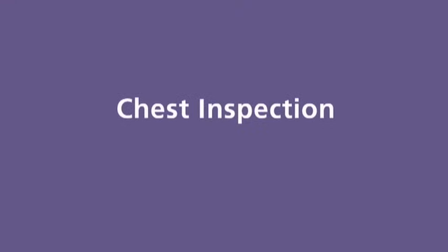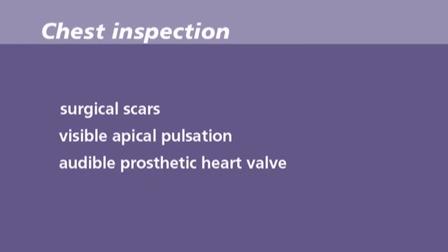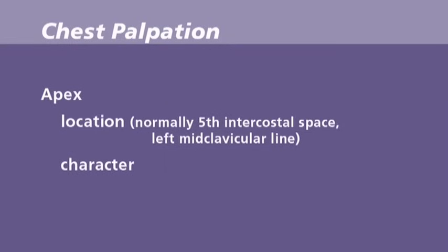The examination of the precordium is like any other examination and should include inspection, palpation and auscultation. Notably for the cardiac examination, percussion of the heart is not required. At this point you must ensure that the chest is fully exposed. I'd just like to look at the front of your chest please — can I ask you to put your arms by your side? It is important to inspect for previous operative scars, for visible apical pulsation and listen for an audible click of prosthetic heart valves. The apex is normally located at the fifth intercostal space, left midclavicular line, unless displaced by enlargement. As well as any displacement, the character of the apex beat is noted.